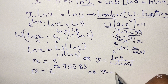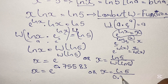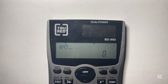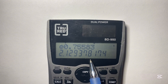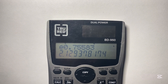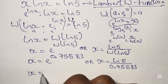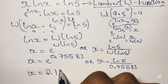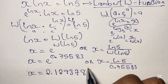We may also write this as x equals ln 5 over 0.75583. Using a scientific calculator to find e to the power of 0.75583, we get the value 2.129378. At the start of the video it was estimated that x would be 2 point something, and here we have x equal to 2.129378.